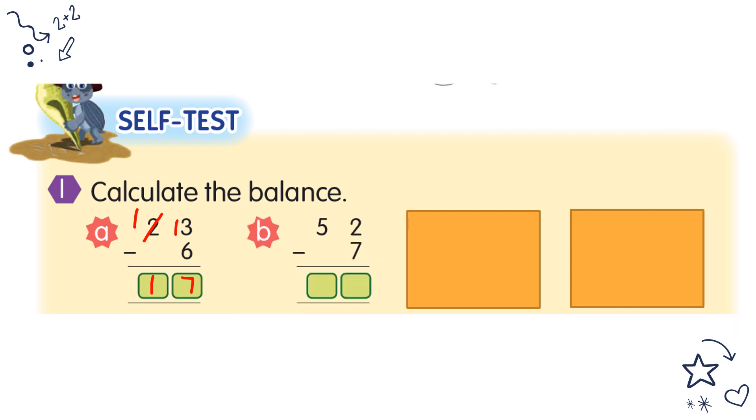Now 52 minus 7. Same, not enough, you borrow. So this becomes 12 minus 7 equals 5. Write down 4. So your answer is 45.